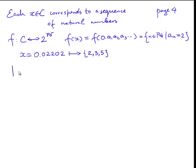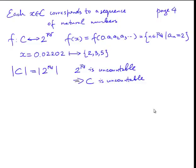So now that means that the number of elements in C is the same as the number of elements in this power set, which as we know is not countable. Since the power set 2 to the N is uncountable, we obtain that C is also uncountable. Thank you.